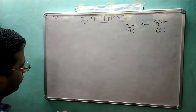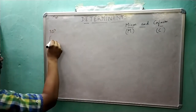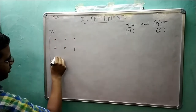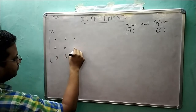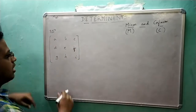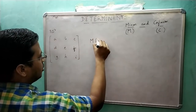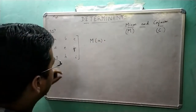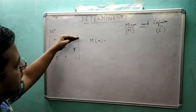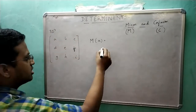Suppose you have a 3×3 square matrix, which means we have 9 elements: A, B, C, D, E, F, G, H, I. Let us find the minor first. The minor of element A means: forget the row containing A and the column containing A, and whatever is left, calculate its determinant.